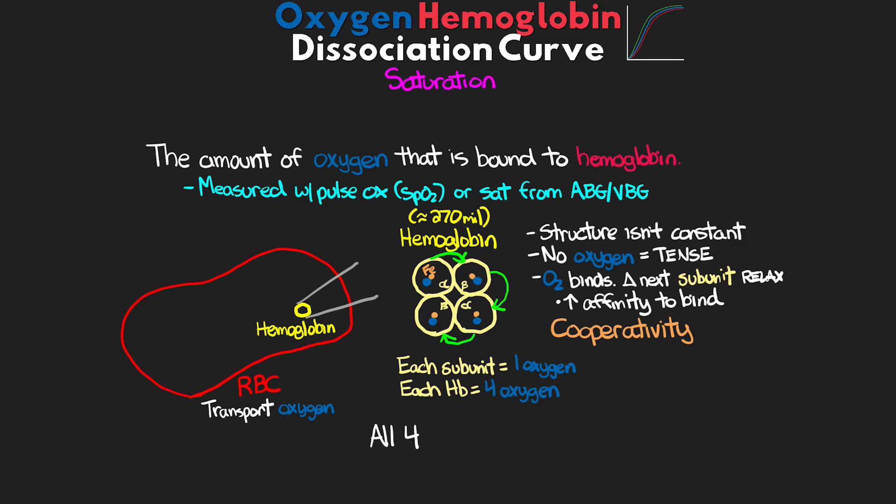Once all four subunits have an oxygen molecule bound, this is referred to as saturated. When we look at the blood as a whole, we can evaluate what percentage of hemoglobin molecules are saturated with oxygen — and this is our SpO2 reading. This can range anywhere from 0 to 100%. For example, if every hemoglobin molecule has three of the four subunits bound, the saturation of our patient would be 75%.